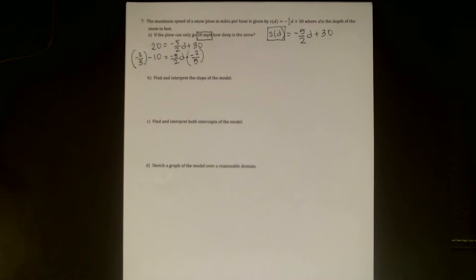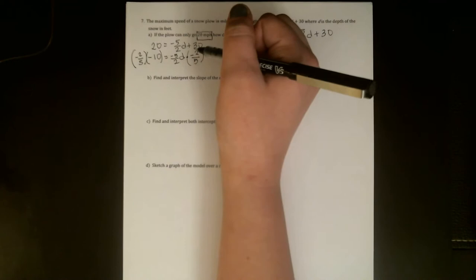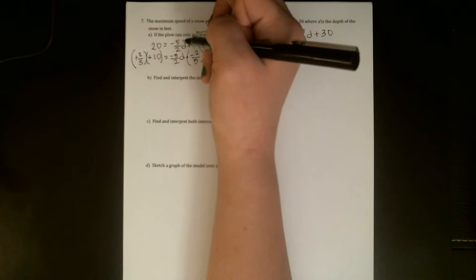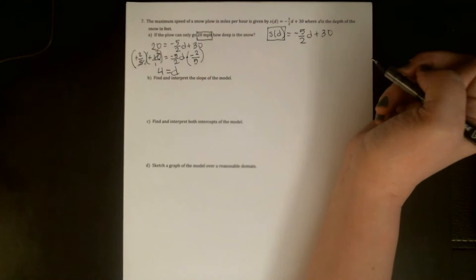Since there's only one D on one side of the equation, this is going to be get rid of everything attached to D using reverse order of operations. The first thing I should get rid of is the 30. It's attached by addition, so I'm going to get rid of it by subtracting. 20 minus 30 is negative 10. Okay, the next thing I need to do is get rid of the negative 5 halves.